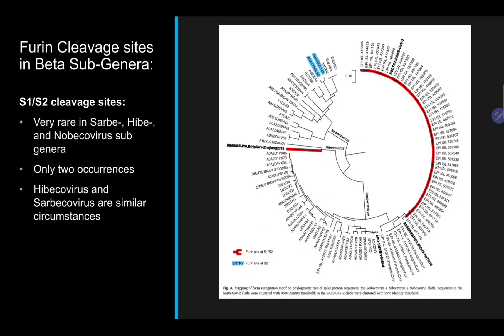Interestingly, of the Sarbe, Hebe, and Nobe viruses, these are the only two viruses in their strains that have both the S1/S2 and S2 prime cleavage sites.